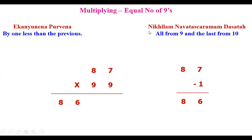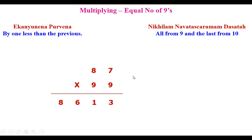Next we use another principle called Nikhilam Navatascharamam Dasatah — in the last we take 10 and all the remaining digits as nines. So here: 10 minus 7 is 3, and 9 minus 8 is 1. So the solution for 87 × 99 is 8613. We are using two principles: Ekanyunena Purvena and the Nikhilam Sutra.